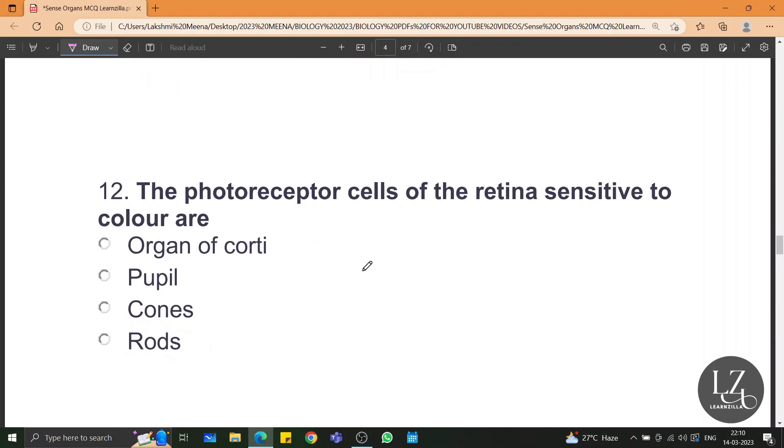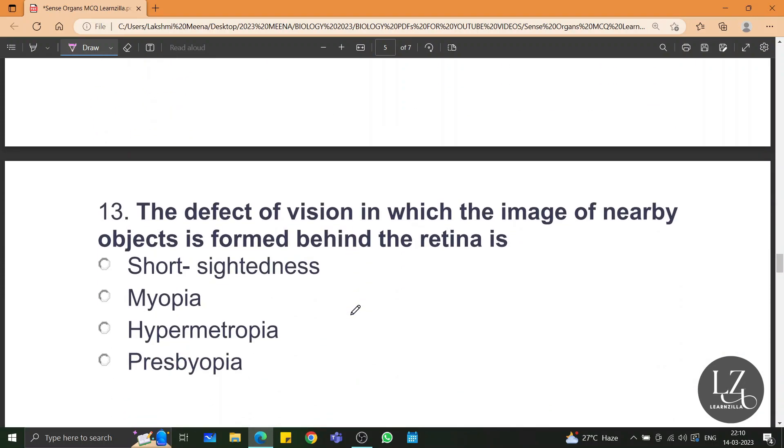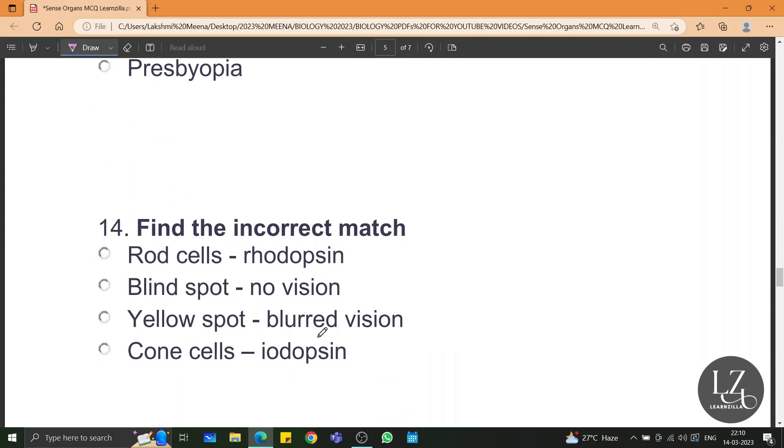The photoreceptors of the retina sensitive to color are cones. The defect of vision in which the image of nearby objects is formed behind the retina is called hypermetropia or hyperopia. Find the incorrect match. Yellow spot blurred vision is the incorrect match. Yellow spot is for clear vision, not blurred vision.